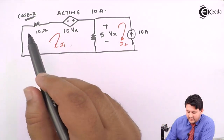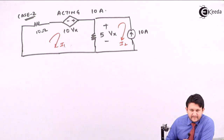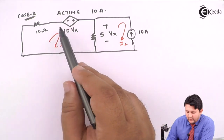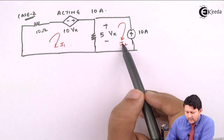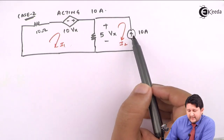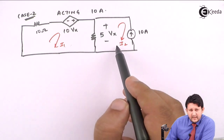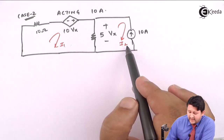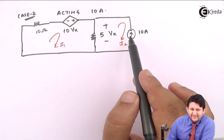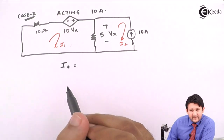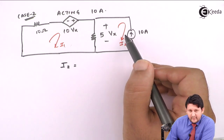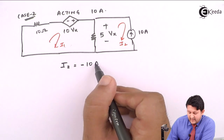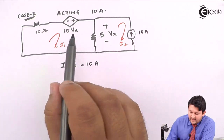In Case 2, applying KVL to mesh 1: you can apply mesh analysis. For mesh 2, the current source is directly in the branch, so you cannot apply KVL there — instead, you directly read the current. Observing the direction of I2 and the 10A source: they are opposite, so I2 = −10A.